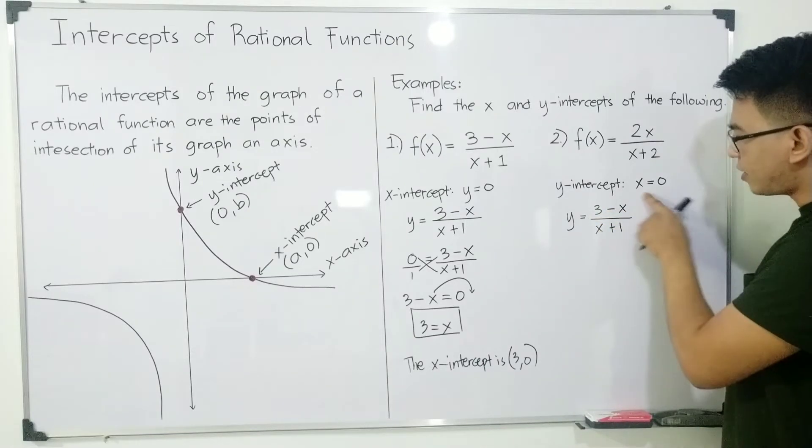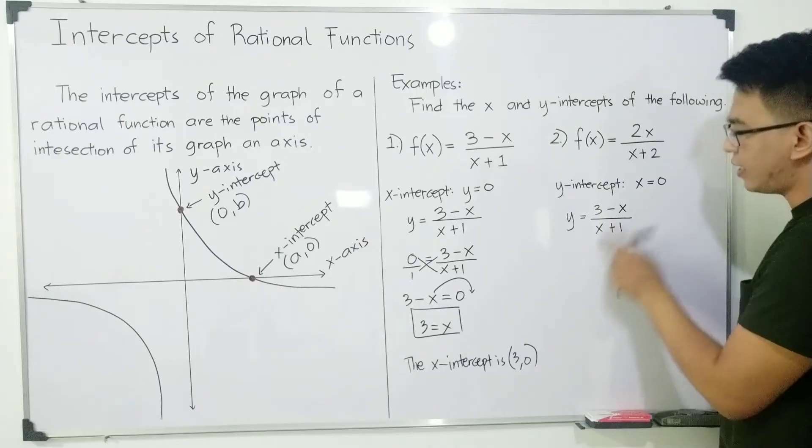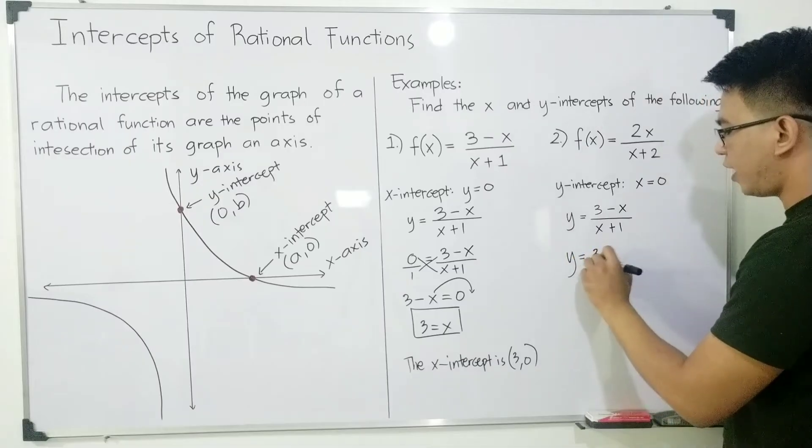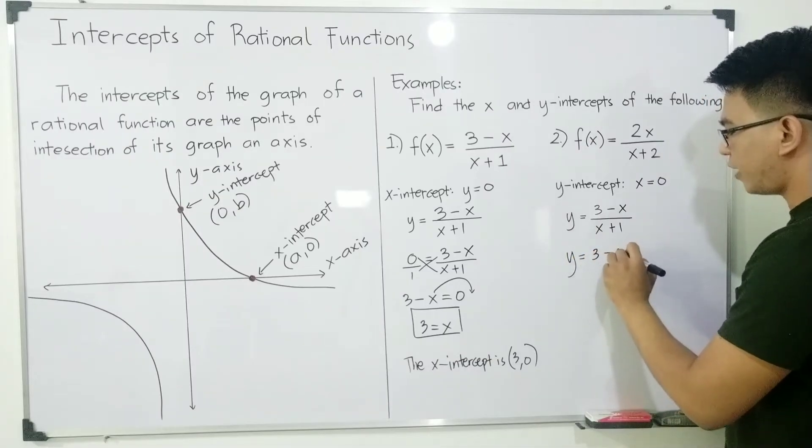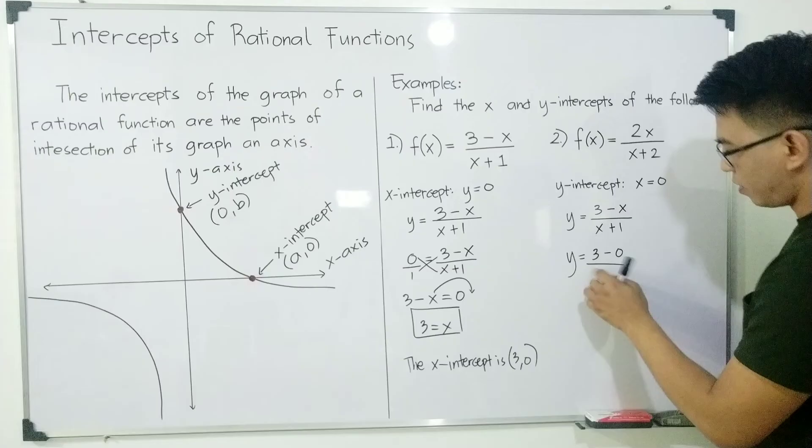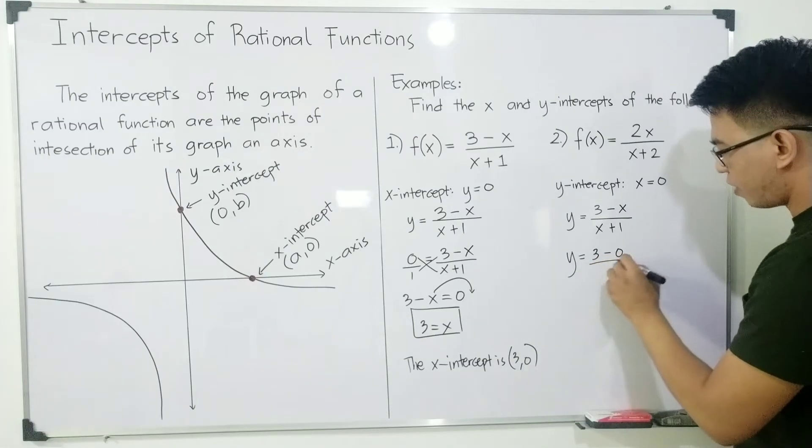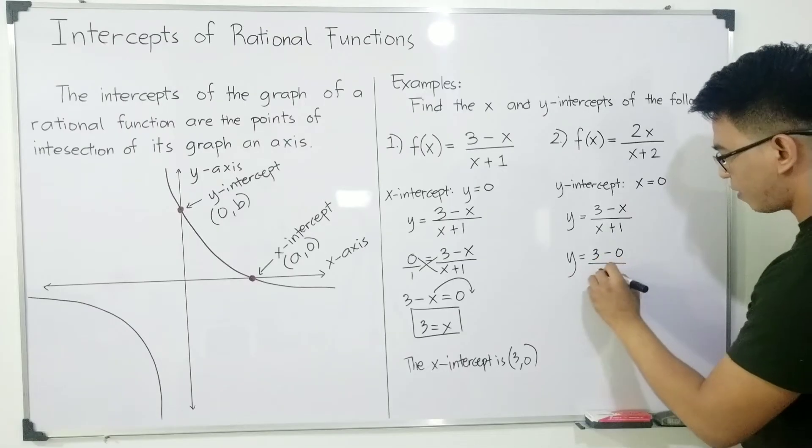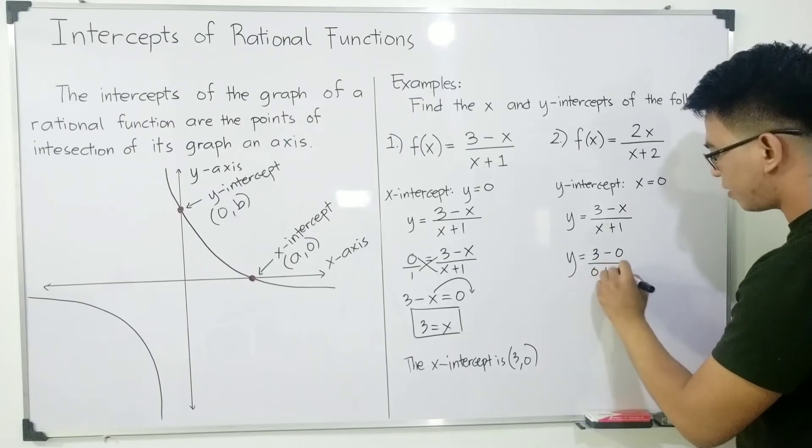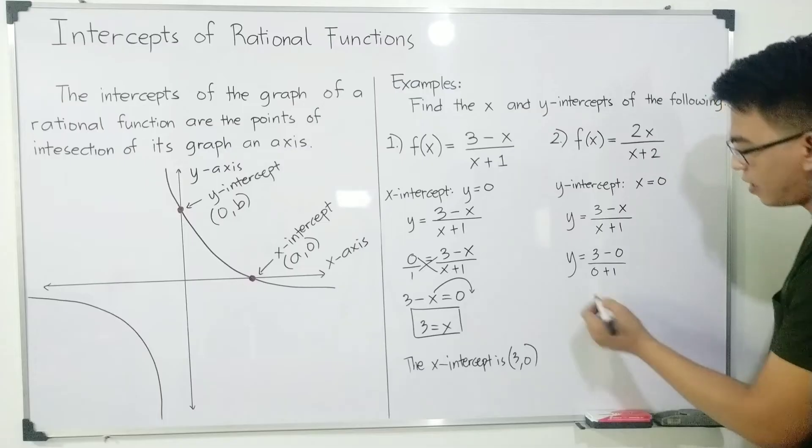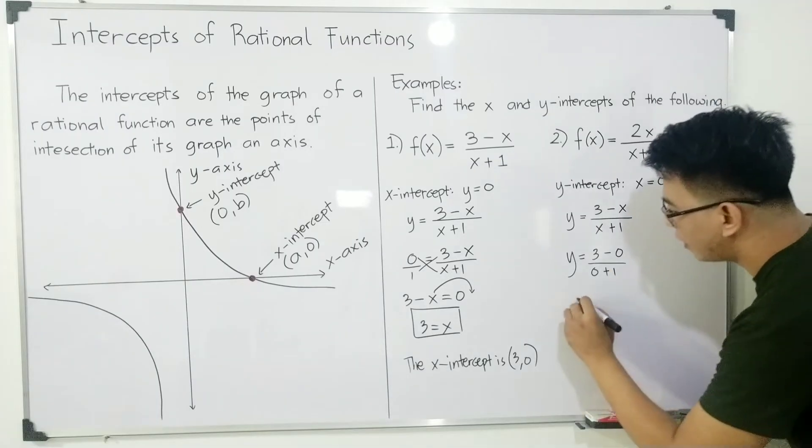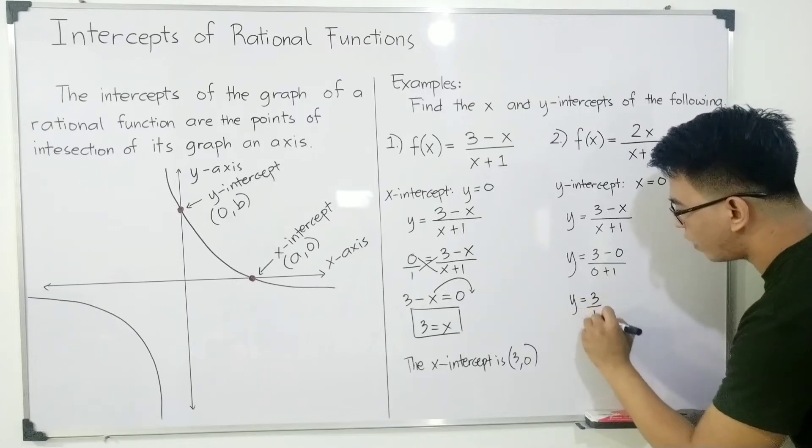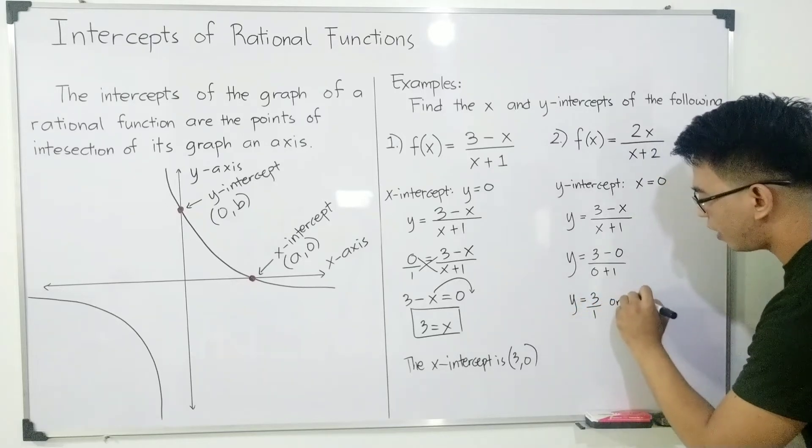And your x is equal to 0, meaning these two x's here should be replaced by 0. It will become y = (3-0) over (0+1). And now guys, simplify this. You will have y = 3/1 or equal to 3.